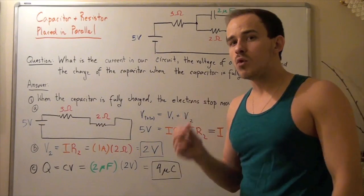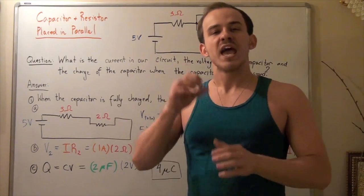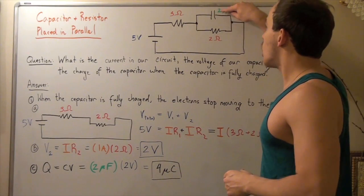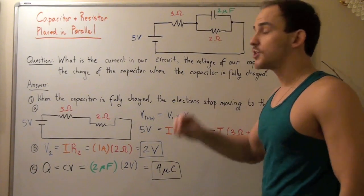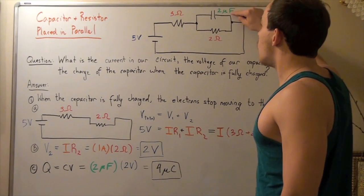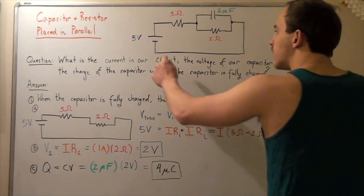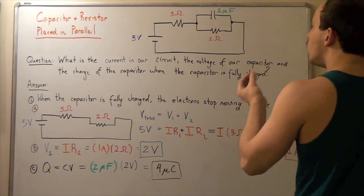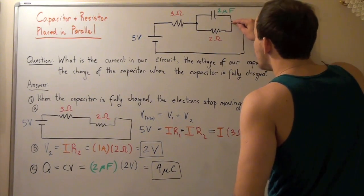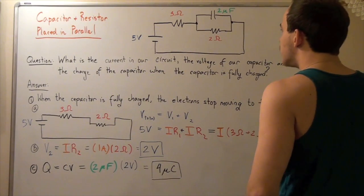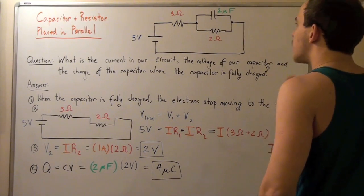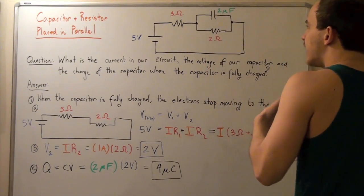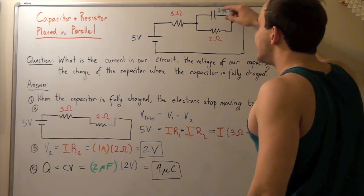Electrons only move when there is a difference in voltage. And because there is no difference in voltage across this capacitor, that means that electrons stop flowing this way. So when the electrons move from our anode into this intersection — this node — all the electrons go in this direction. None of the electrons move up because there is no voltage difference on this capacitor. Therefore, it is like this capacitor isn't even here.